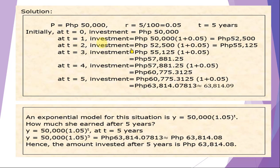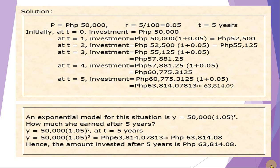For example, if the problem asked for t equals 10, you would need five additional computations computing year after year, but you would end up with the same result. The exponential model gives us an efficient way of solving the problem.